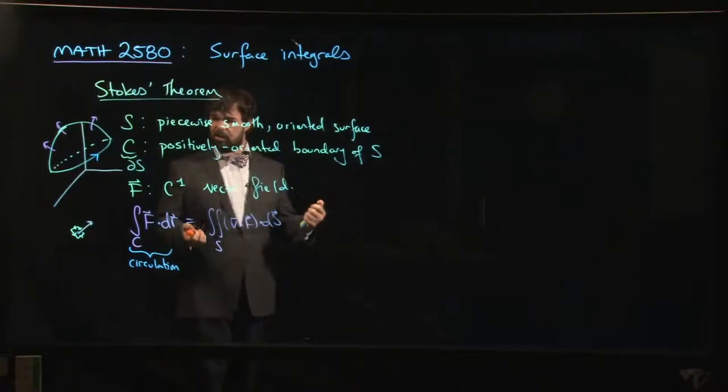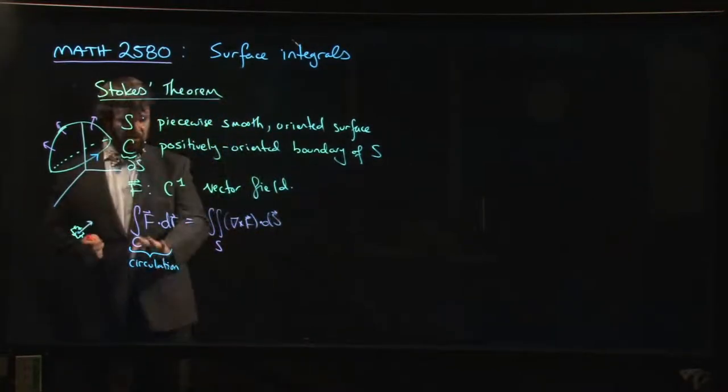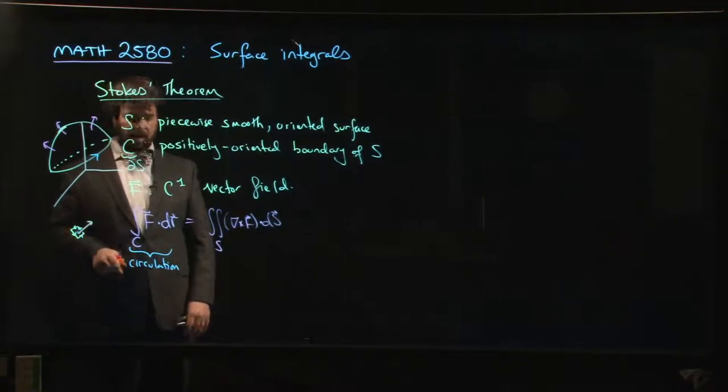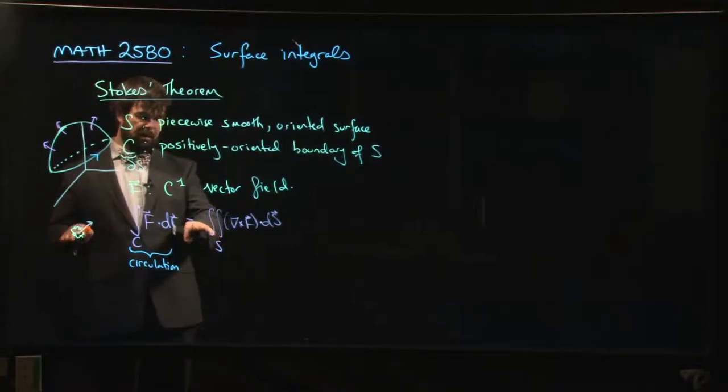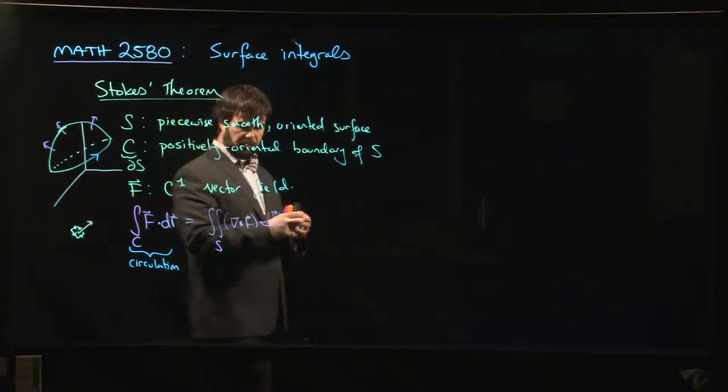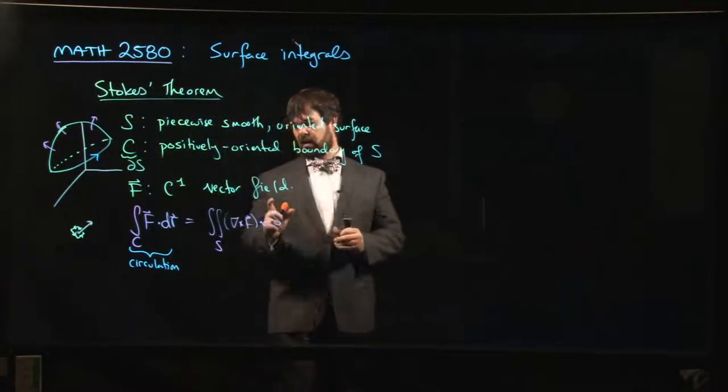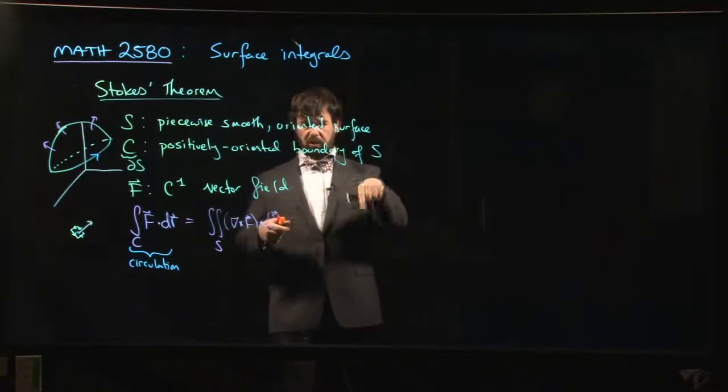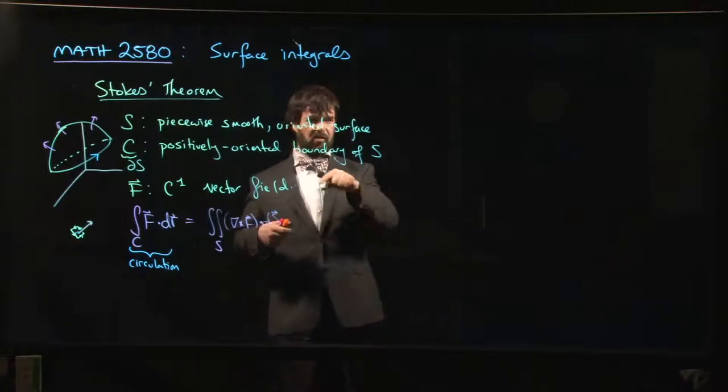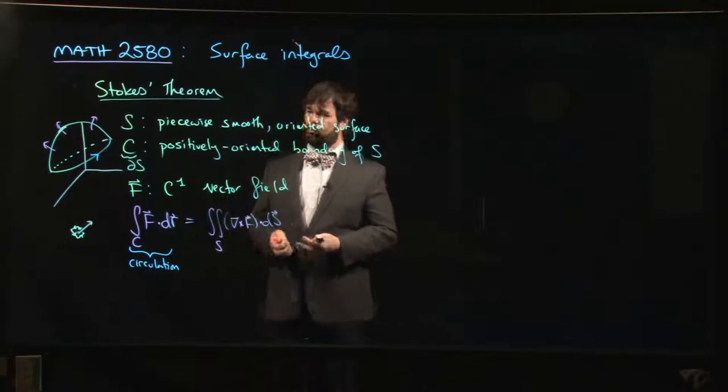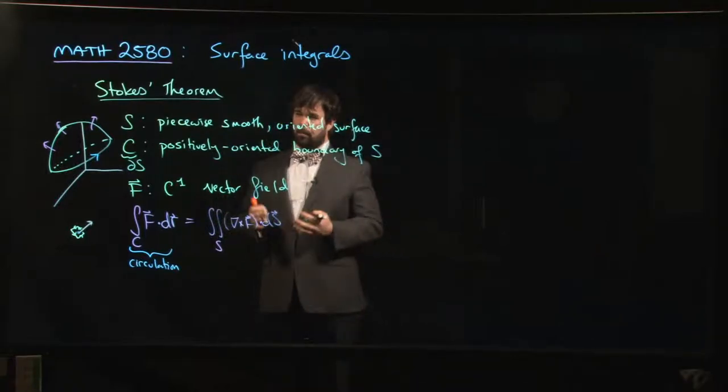So basically what you can do is if you take this circulation, you divide by the area of the little rectangle. And then you take a limit as that rectangle shrinks down to the point, and what you get is exactly the curl at that point. So the curl gives you this measure of circulation, this tendency for the vector field to move things around, to spin things around. So we've seen that already.